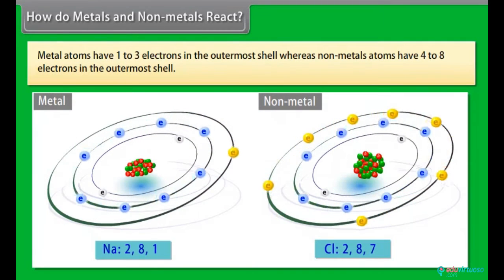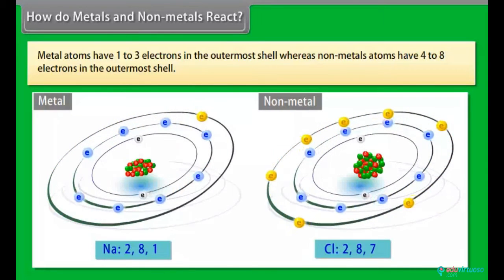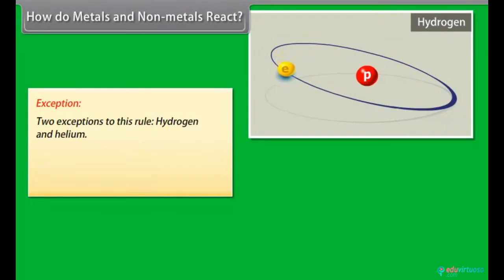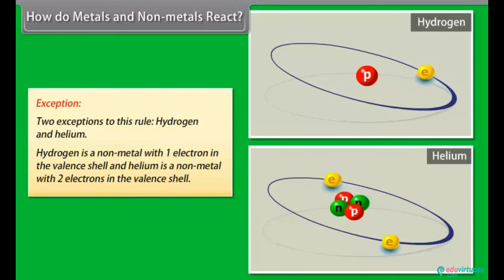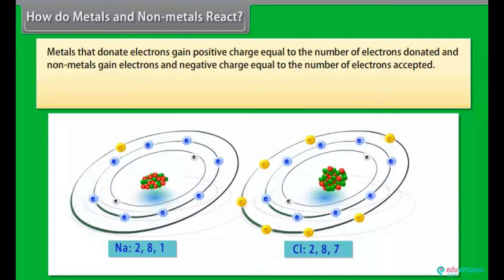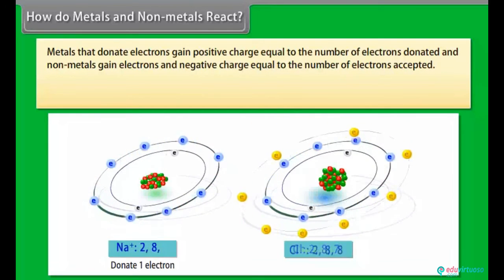How do metals and non-metals react? Metal atoms have one to three electrons in the outermost shell, whereas non-metal atoms have four to eight electrons in the outermost shell. Exception. Two exceptions to this rule: Hydrogen and helium. Metals that donate electrons gain positive charge equal to the number of electrons donated. And non-metals gain electrons and negative charge equal to the number of electrons accepted. When a metal atom donates one, two or three electrons from its valence shell to another non-metal atom that has the ability to accept these electrons, it is known as electrovalency.